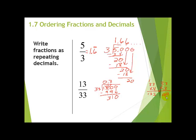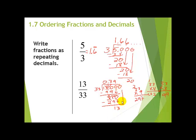Continuing: 3 sets of 33 is 99, so 9 times 33 is 297. Subtracting gives a remainder of 13, then 31 with a zero added brings us to 310. 33 goes into 310 nine times again — and we're back to where we started, which means it repeats. So 13/33 equals 0.3̄9̄: put the bar over both the 3 and the 9, since those two digits repeat to infinity.